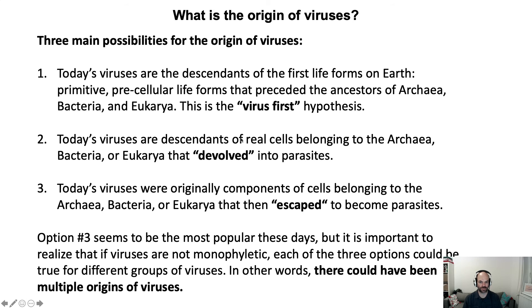First is the virus-first hypothesis, which is that viruses are ancient and maybe all life on the planet evolved from a virus. This has an intuitive appeal because viruses are simple — they're basically simple replicating particles — and the first life forms must have been simple replicating particles. So that has some appeal, though I think it also has some problems with it.